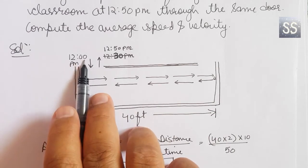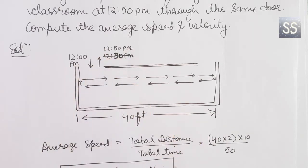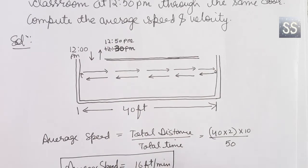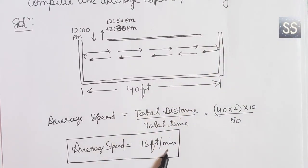Total time - 12 pm she enters and 12:50 pm she leaves. So total time will be 50 minutes. So average speed is 16 feet per minute.